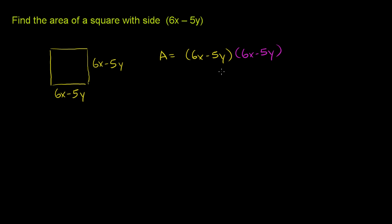So we just have to multiply these two binomials. And to do this, you could either do FOIL if you like memorizing things, or you could just remember this is just applying the distributive property twice. So what we could do is distribute this entire magenta 6x minus 5y times each of these terms in the yellow 6x minus 5y.